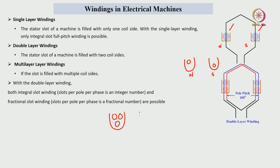Multilayer windings have slots filled with n number of coil sides — three, four, or more. The advantages of multilayer windings are that any type of winding can be designed, whether integral slot, fractional slot, or different slot numbers, enabling new types of winding configurations.